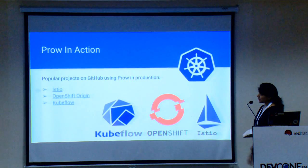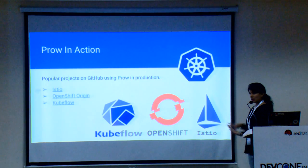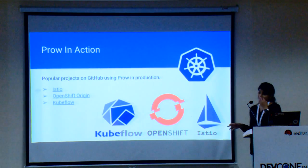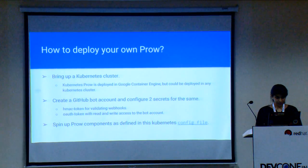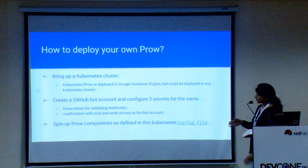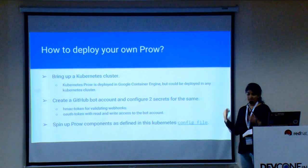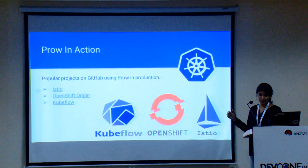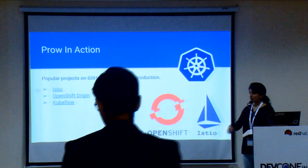In production, you can see Prow being used in a lot of open source projects like Istio, OpenShift, Origin, and Kubeflow. All these projects are actually using Prow as their CI/CD tool, and they work fine at that scale.